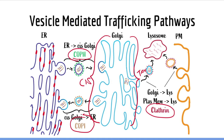So what you need to know is that there are three types of coat proteins. COP2-coated vesicles transport proteins from the endoplasmic reticulum to the cis Golgi. COP1-coated vesicles transport proteins from the cis Golgi back to the endoplasmic reticulum. Lastly, clathrin-coated vesicles serve as the gateway to the lysosome — they can either bring contents from the trans Golgi to the lysosome, or bring endocytosed material from the plasma membrane to the lysosome.